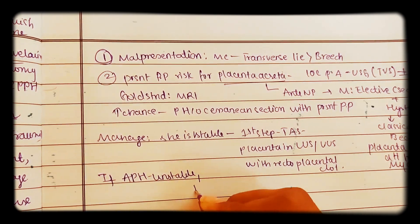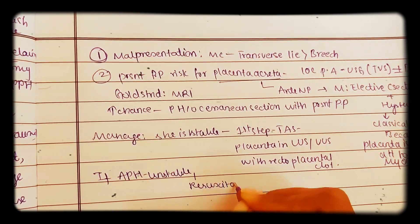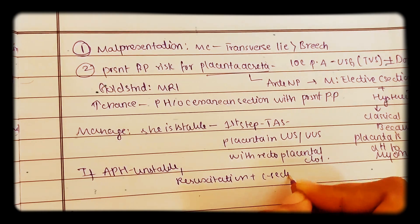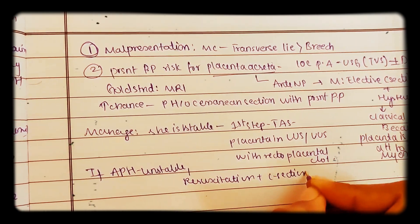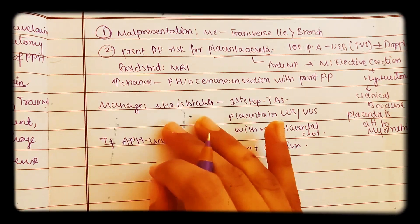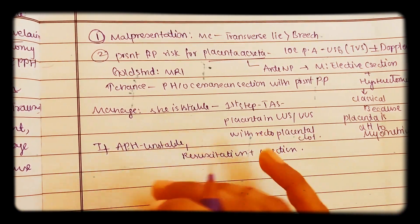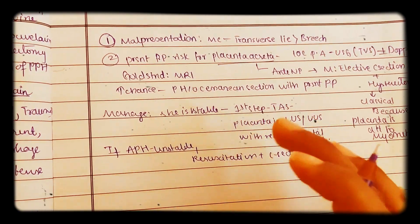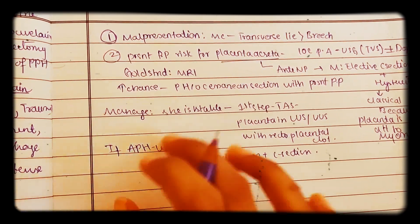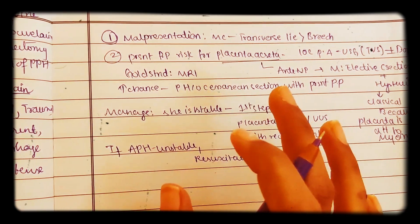If the patient with APH is unstable, we will do resuscitation plus c-section. So if vitals are stable, we do USG; if the vitals are not stable, we do resuscitation and c-section.